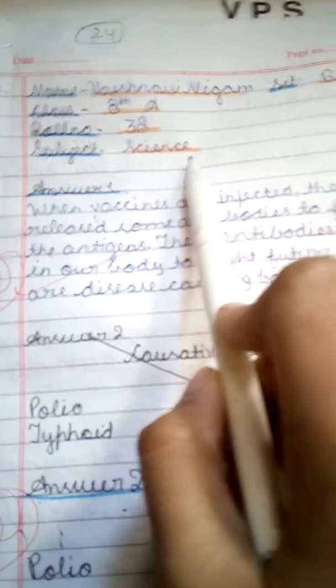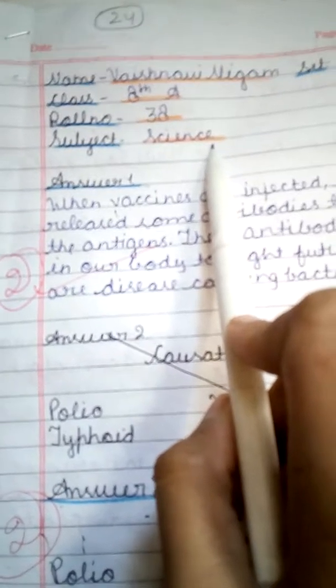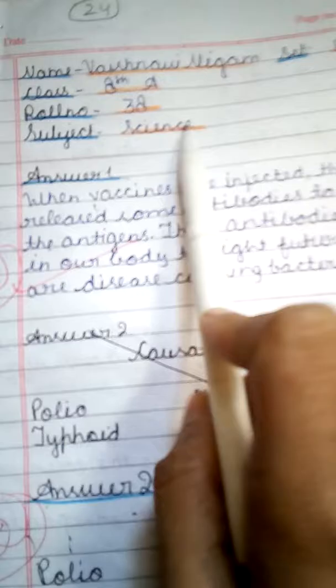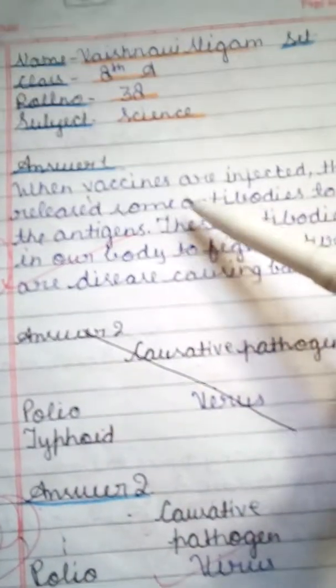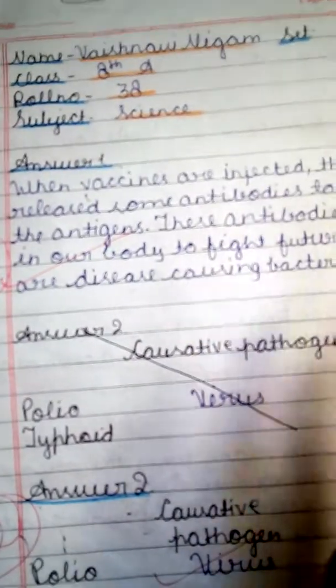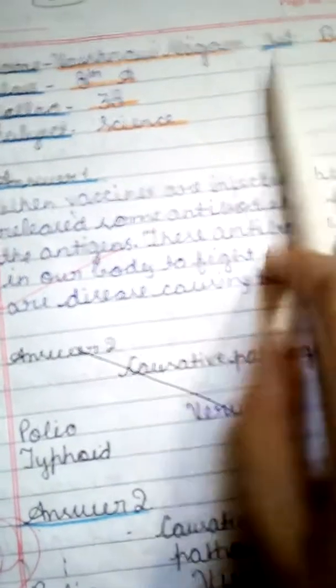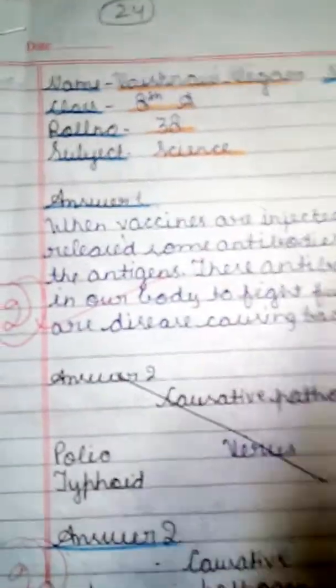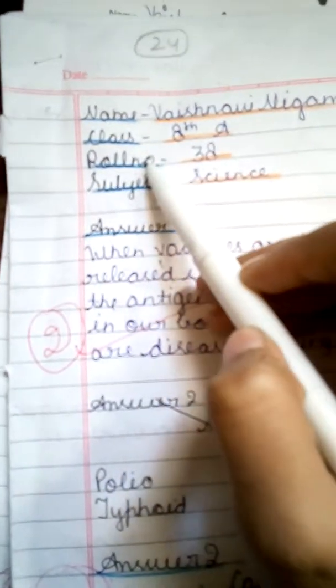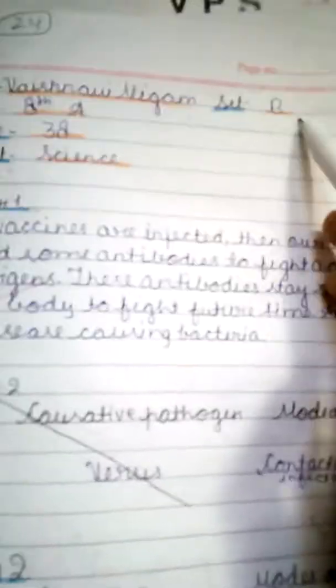If you use ball pens it will be very good, because with ball pens we can add water and it will not have an effect. If we use gel pens it will have an effect. Then we will write our identity — name, class, number, subject, paper, and set A or B — at the same time.